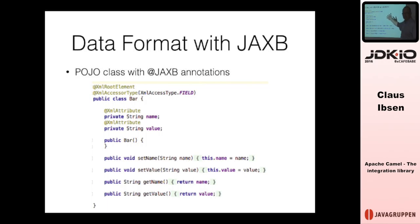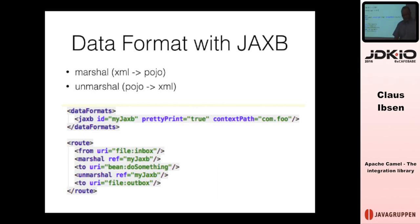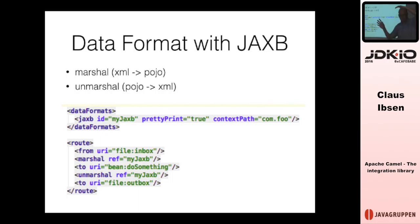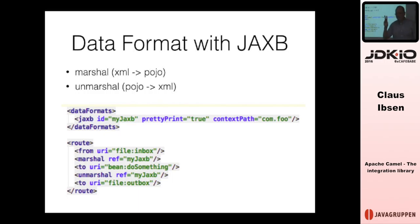Here's an example with JAXB, which comes from Java out of the box. You have a POJO class annotated with JAXB. You pick up an XML file, unmarshal it into the POJO using JAXB, call a bean to do something with the POJO, then marshal it back to XML and save it to a file. One warning: when using data formats, I sometimes confuse marshal and unmarshal — like a USB stick that can go the wrong way.